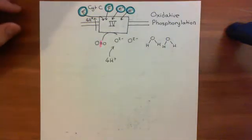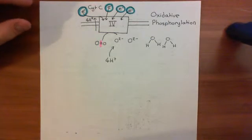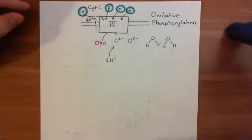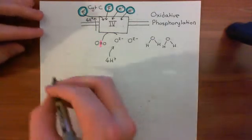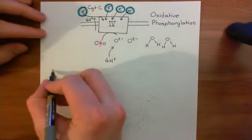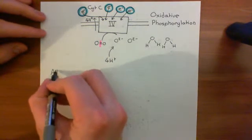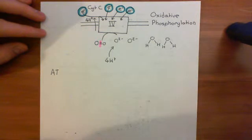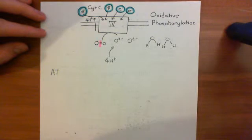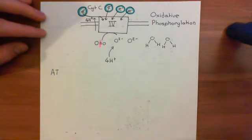Welcome to this final video on the electron transport chain. In this video, what we want to talk about is the ATP synthase. We've seen how complex 1, complex 2, complex 3 and complex 4 are involved in the electron transport chain, and how they are involved in the moving of protons from the matrix of the mitochondria into the intermembrane space.